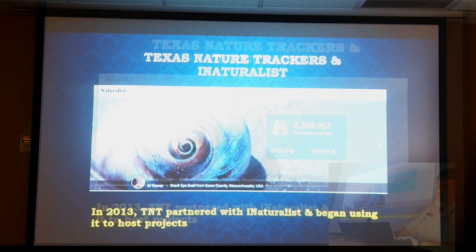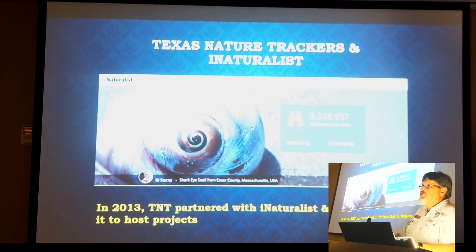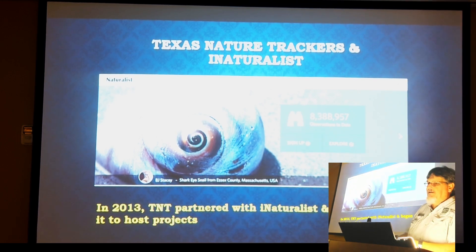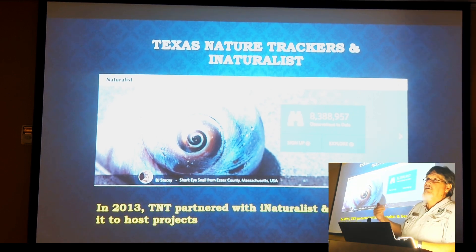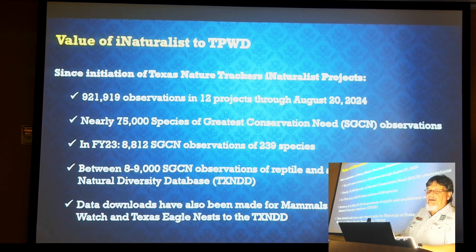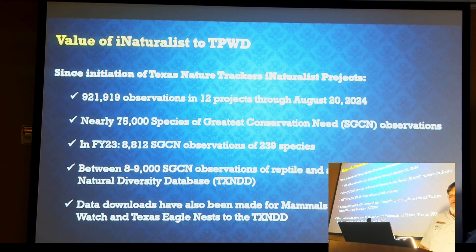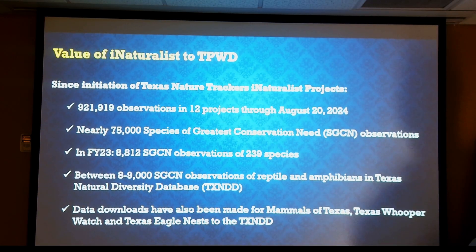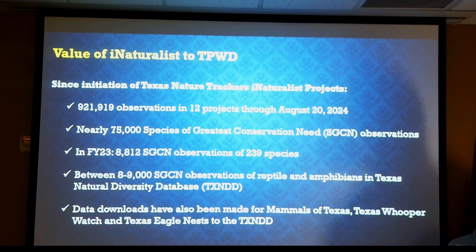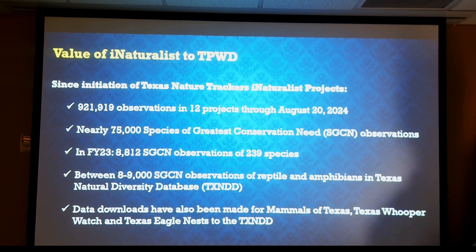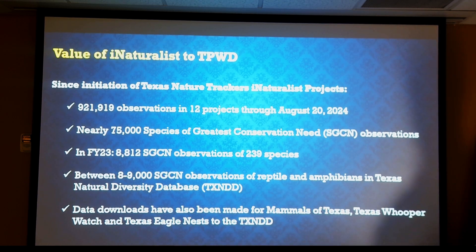Back in 2013, Texas Nature Trackers started working with iNaturalist — back when it only had 8 million observations. Now it's over 200 million. During a count this morning, we were closing in on a million observations just within our Texas projects — there are actually way more observations in Texas overall, but just in our 12 projects we're closing in on a million. Of those, about 75,000 are observations of Species of Greatest Conservation Need.